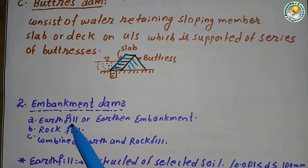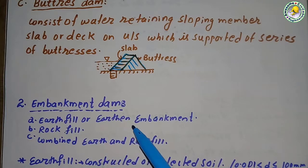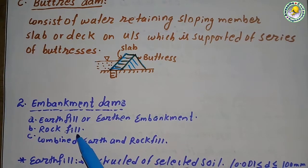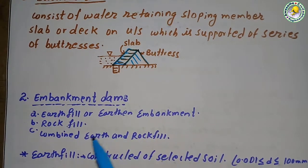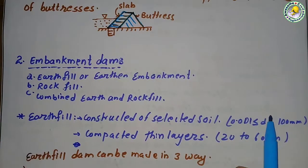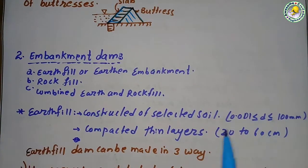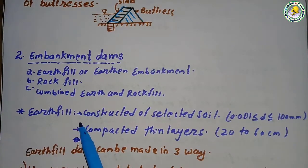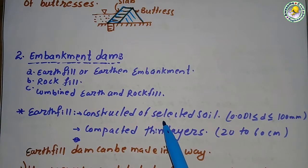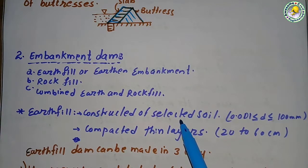The second category is embankment dams, which are also classified into three groups: earth fill or earthen embankment dam, rock fill dam, and combined earth and rock fill dam.